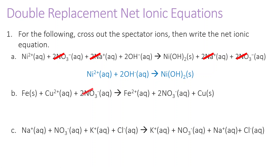For the next one, we're going to see that nitrate cancels. Nitrate cancels a lot because nitrate is always soluble — it's always going to be aqueous. So what we're left with for B, which is a single replacement reaction, is the reaction between iron solid and copper ion to form copper solid and iron ion.